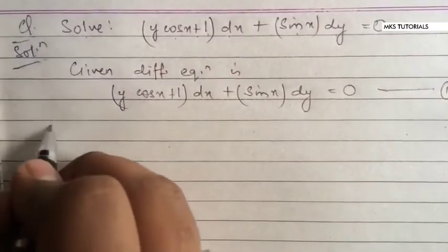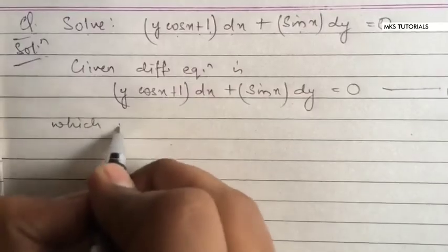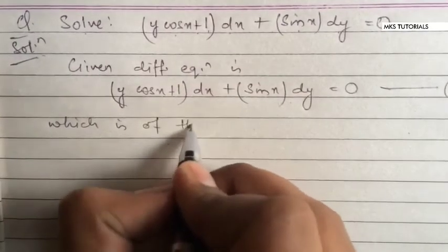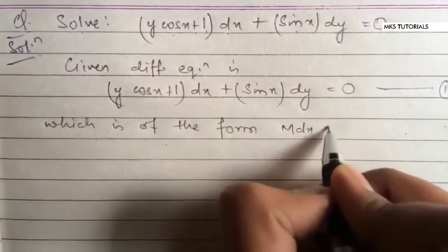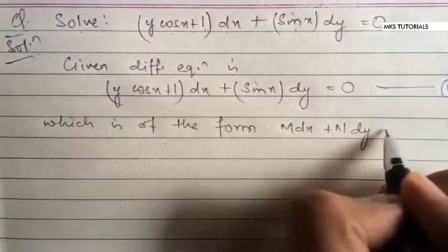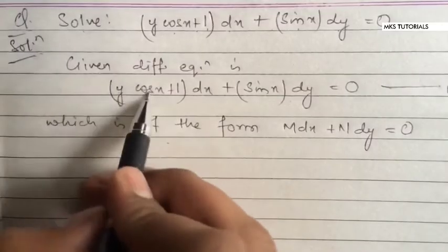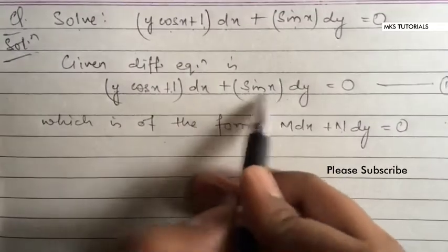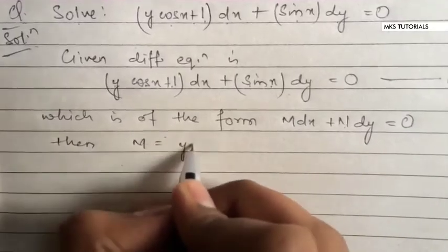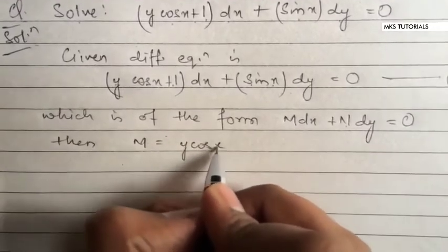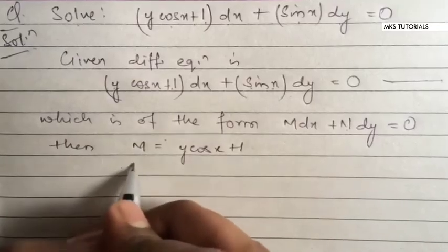This is equation number 1, which is of the form M dx plus N dy equals 0, where M is y cos x plus 1 and N is sin x.